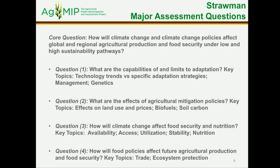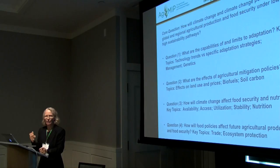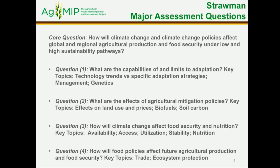Now let's turn to the assessment itself. We did brainstorming with the planning committee on major assessment questions, and this is what the planning group came to after quite a few discussions. There's an overarching question and then four that could be put on the table. The overarching question is: how will climate change and climate change policies affect global and regional agricultural production and food security under low and high sustainability pathways?